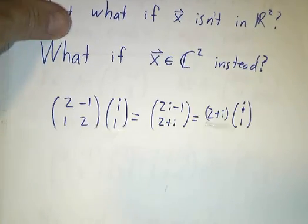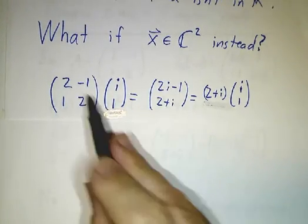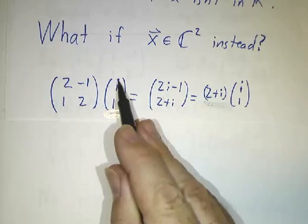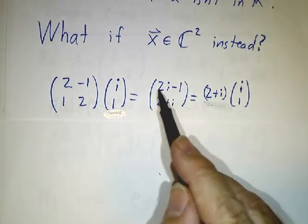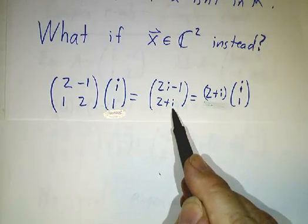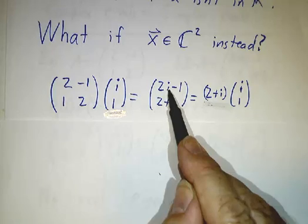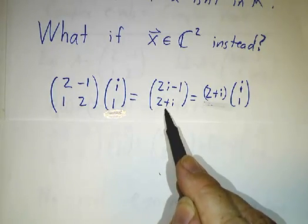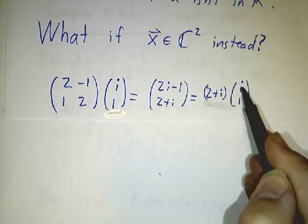And in fact, we discover that if you feed it the vector (i,1), you multiply it out: the matrix (2,-1; 1,2) times (i,1) gives us (2i-1, 2+i). And 2i-1 is i times (2+i), and this is 1 times (2+i). So the whole thing gives us (2+i) times (i,1).